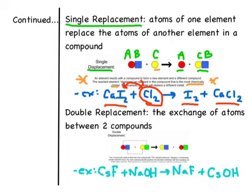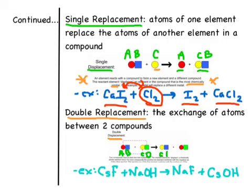The fourth type is double replacement, also called double displacement. Here you start with two compounds and basically switch the partners within them. If compound AB and compound CD react, we get new compounds CB and AD — a switching or exchange of atoms between the compounds.